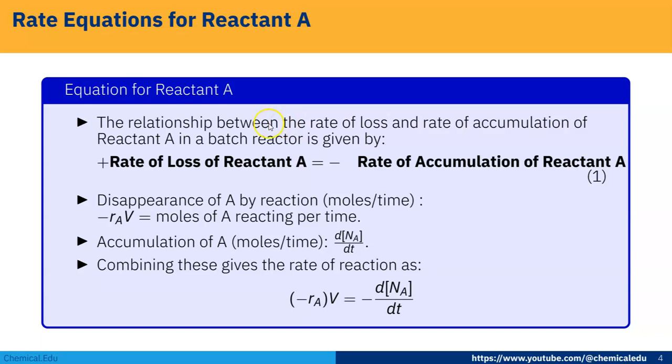The relationship between the rate of loss and rate of accumulation of reactant A in a batch reactor is given by: rate of loss of reactant A is equal to minus rate of accumulation of reactant A.